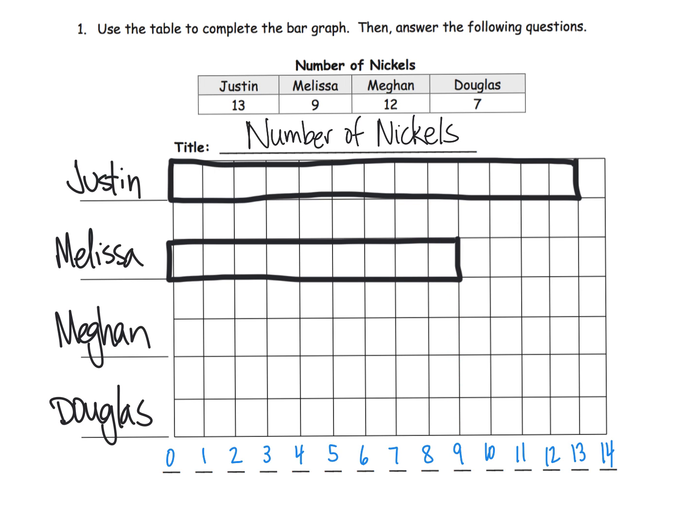And of course another way to do it, to verify, is to count: one, two, three, four, five, six, seven, eight, nine. So there we go, we got 9. Now we have Megan. Megan has 12 nickels, and so Megan is gonna go right there. And then lastly, Douglas with 7 nickels.